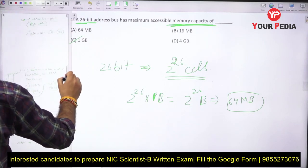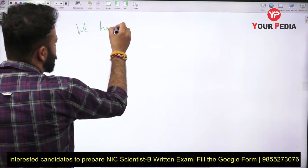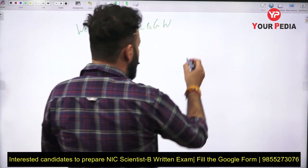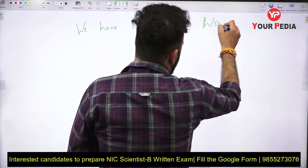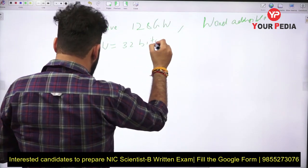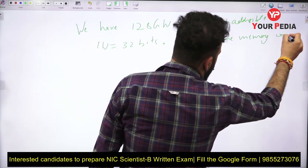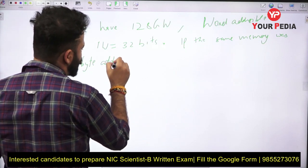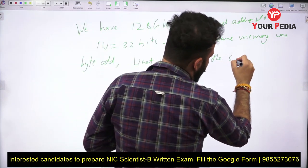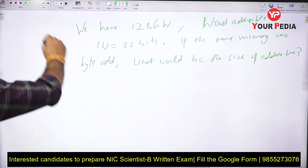Now let's try a question that was asked in the Scientist B exam. The question is: we have 128 GW memory — GW meaning 128 giga-words. The memory is word addressable and the size of one word is 32 bits. If the same memory was byte addressable, what would be the size of one cell?